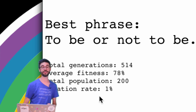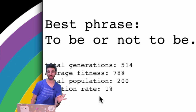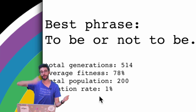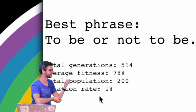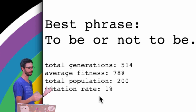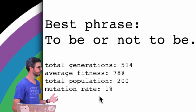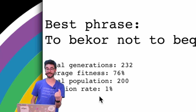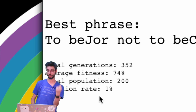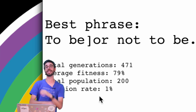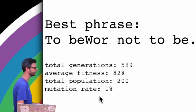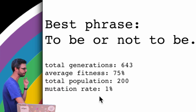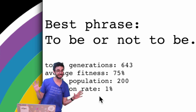What's the average fitness? Remember the fitness function calculates the percentage of characters correct, from 0 to 100%. You can see the average population fitness goes up over time. It doesn't get to 100% because when one element of the population has the correct phrase, the rest of them still don't. I'm also showing you the total population and the mutation rate.